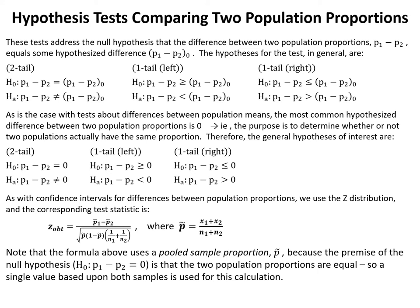For these tests, we use the Z distribution. The test statistic is: Z obtained equals P-bar 1 minus P-bar 2 divided by the square root of P-tilde times 1 minus P-tilde times the quantity 1 over N1 plus 1 over N2. P-tilde is the pooled sample proportion, equaling x1 plus x2 over N1 plus N2. The pooled proportion is used because the null hypothesis — that P1 minus P2 equals zero — is essentially saying the two population proportions are equal, so a single combined value is used.